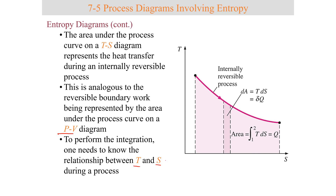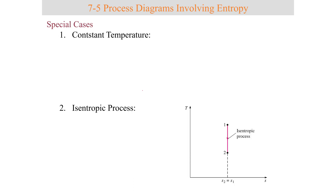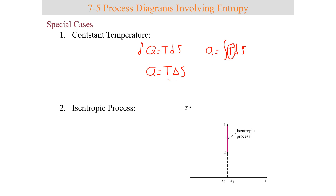To perform the integration, one needs to know the relationship between temperature and entropy during a process. For a constant temperature process, the heat transfer equals T times delta S. If the process is isentropic, it represents constant entropy on a TS diagram, shown as a vertical line. In that case, the change in entropy is zero, so the integral yields a heat transfer of zero.